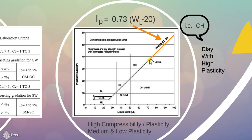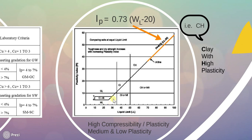There is a line called the A-line which divides the different groups. The equation of the A-line is: IP = 0.73 × (WL − 20). It depends on the liquid limit. This line divides the chart on the basis of liquid limit into 3 different groups: high plasticity or high compressibility, medium plasticity or compressibility, and low plasticity or compressibility.